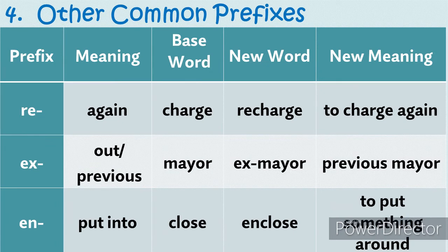The fourth group contains other common prefixes. The prefix re- means again. When added to the base word charge, a new word is formed: recharge, meaning to charge again. The prefix ex- means out or previous. When added to the base word mayor, a new word is formed: ex-mayor, meaning previous mayor. The prefix en- means put into. For example, when added to the word close, the new word is enclose, meaning to put something around.